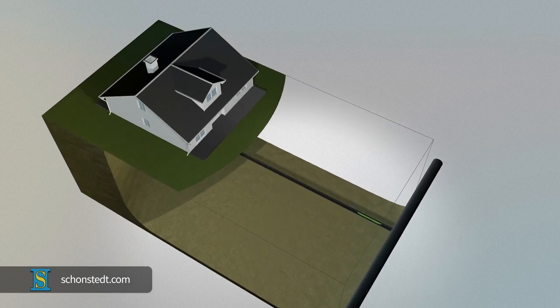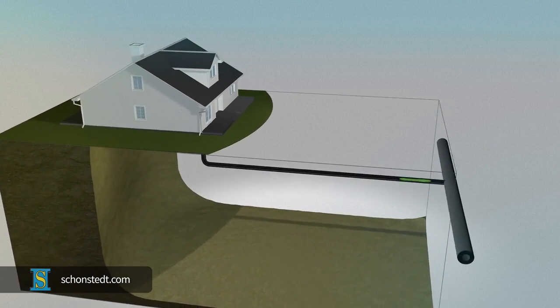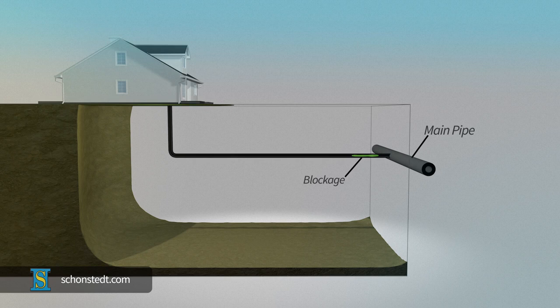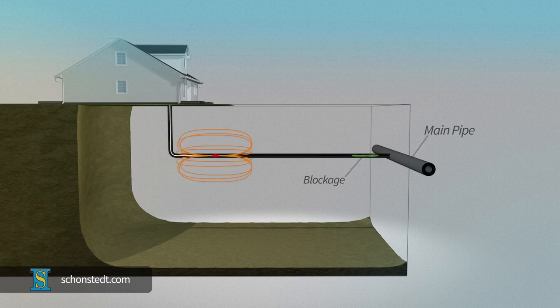Sondes are typically used to locate a blockage in a PVC pipe going from a house or building to a street or main pipe a short distance away. It is necessary to have a general idea of where the sonde might be and in what direction it is being pushed.